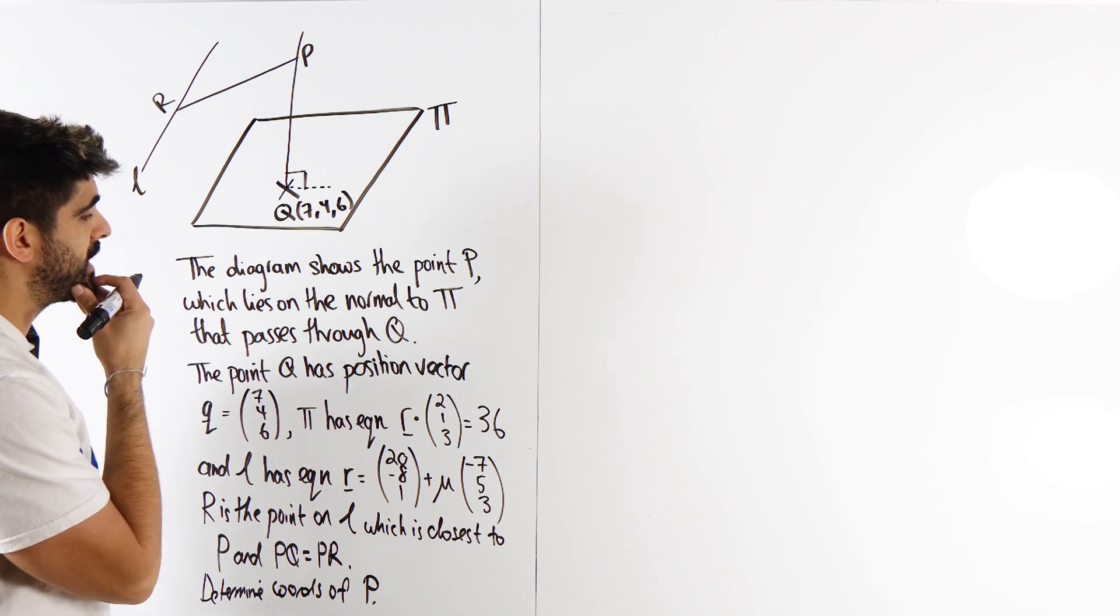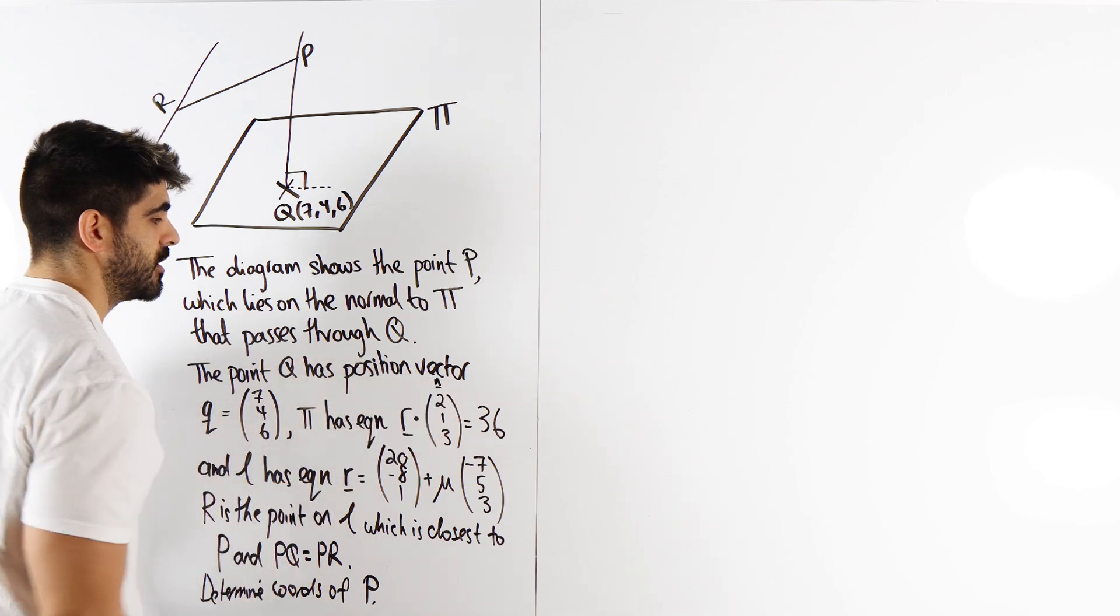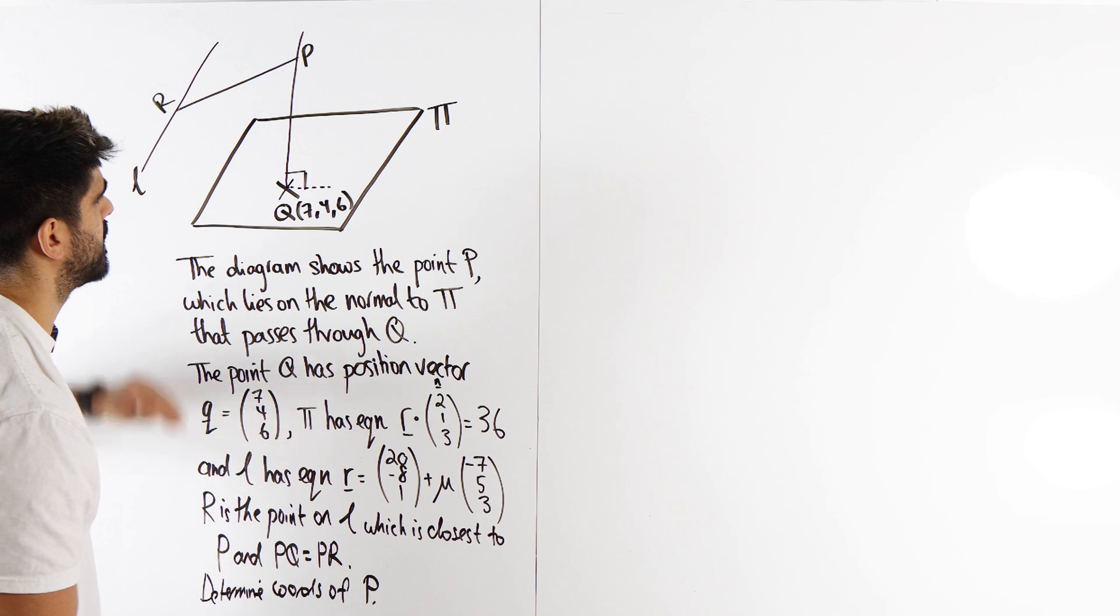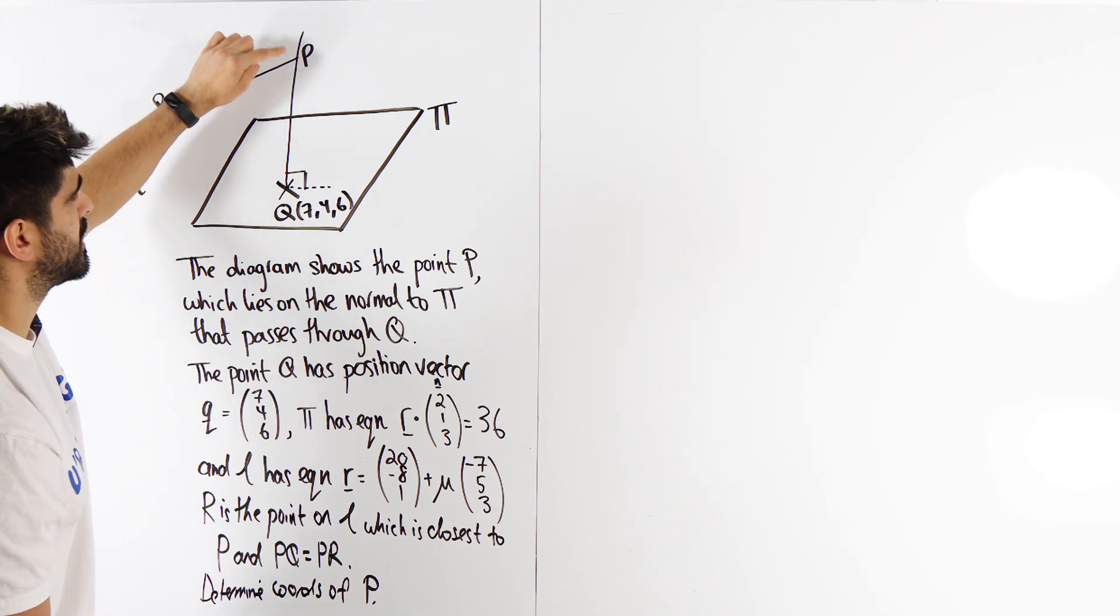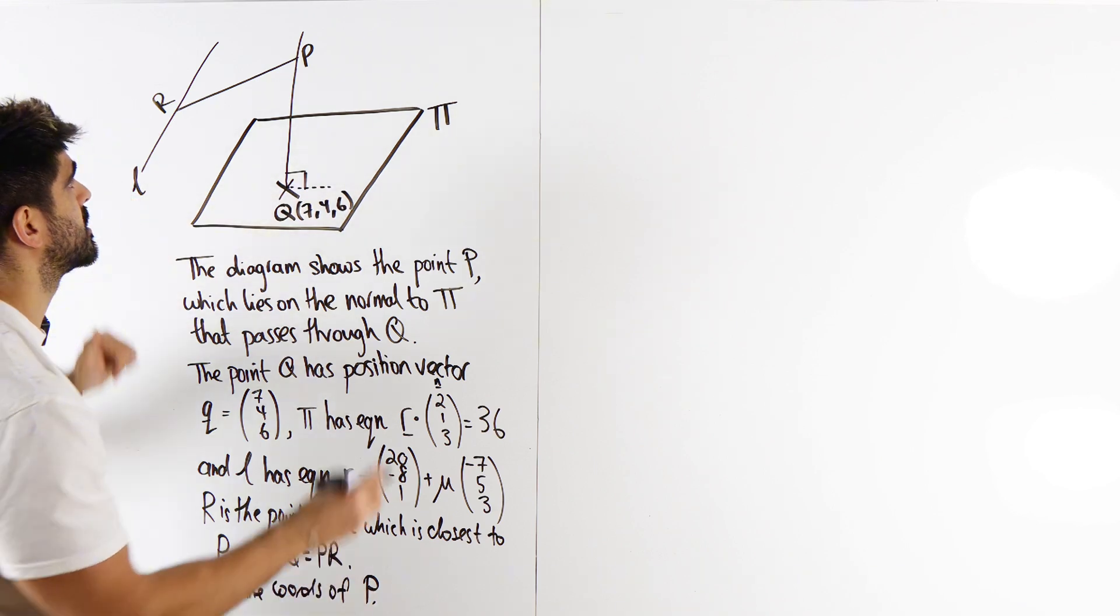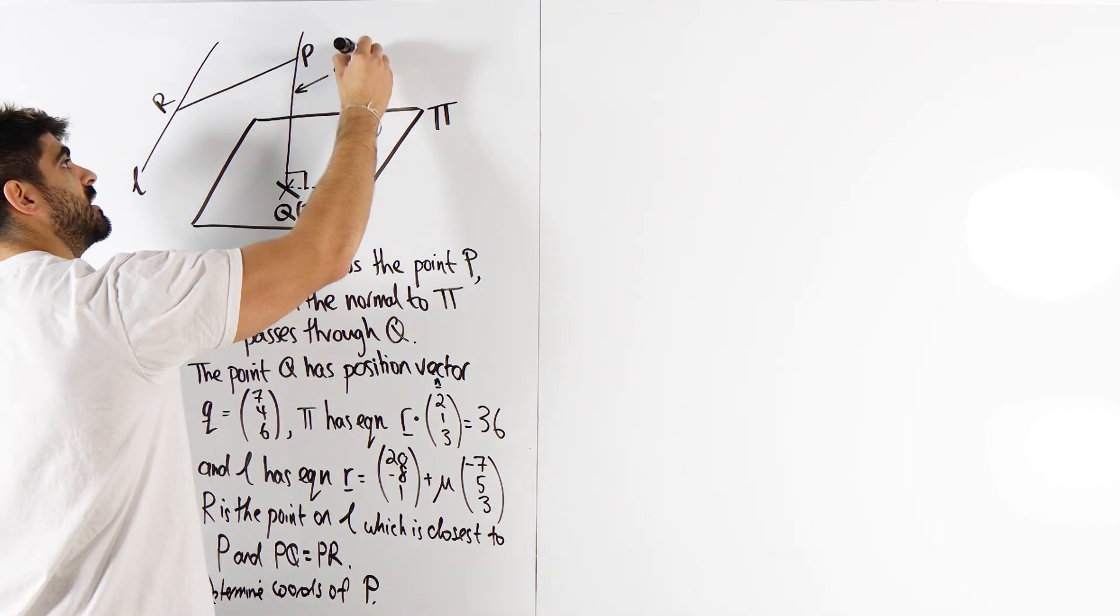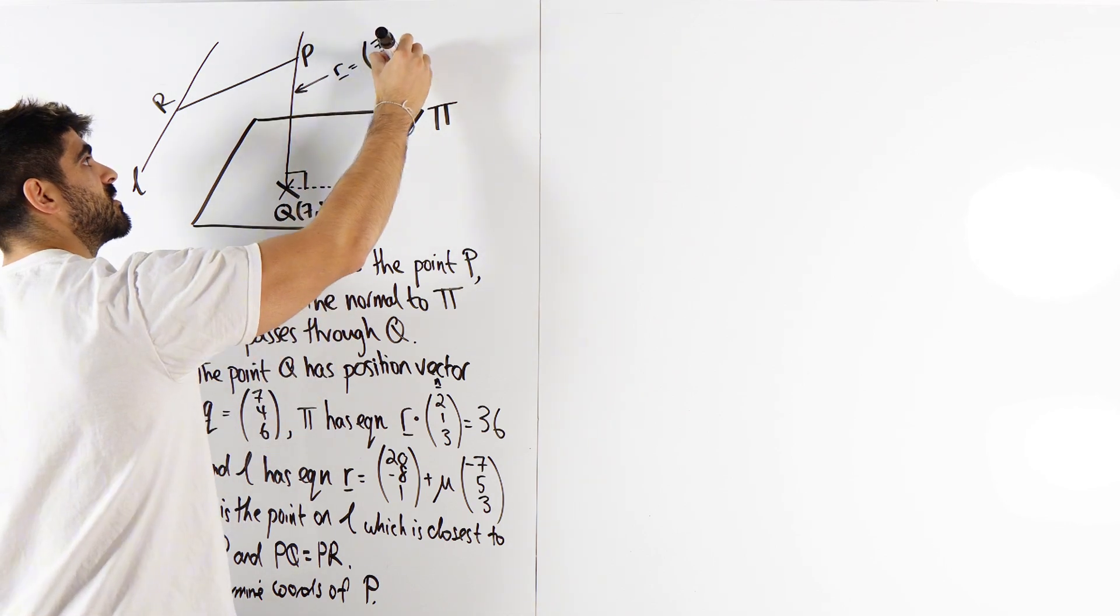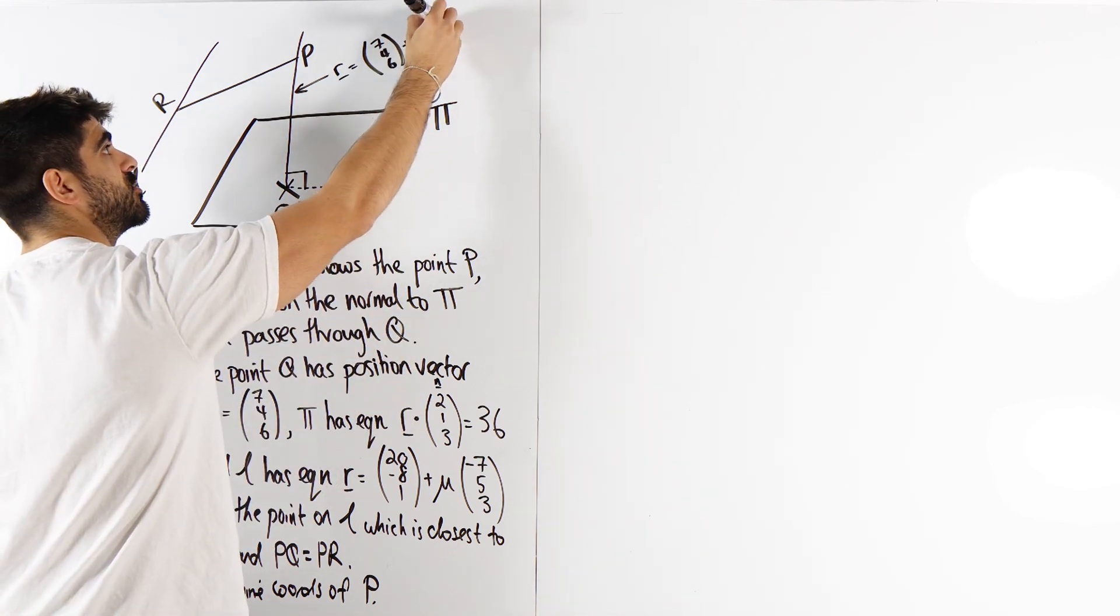Now, the only thing relevant really there is that the 2, 1, 3 is your normal. R dot n equals p. That's giving me vibes of working out the equation of this straight line, because P will lie on that straight line. So I'm going to label this straight line as R equals 7, 4, 6 plus lambda times the direction vector 2, 1, 3.